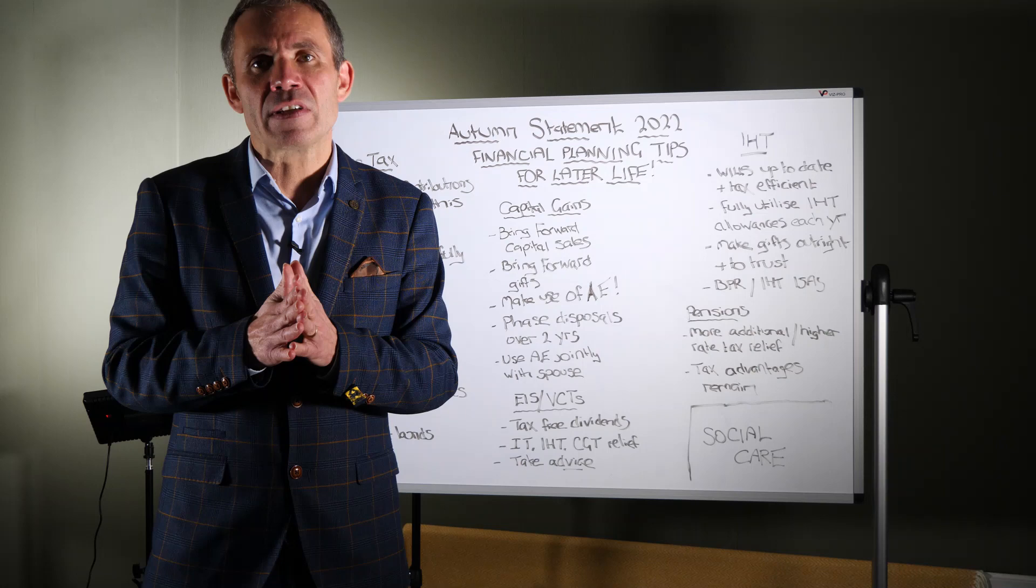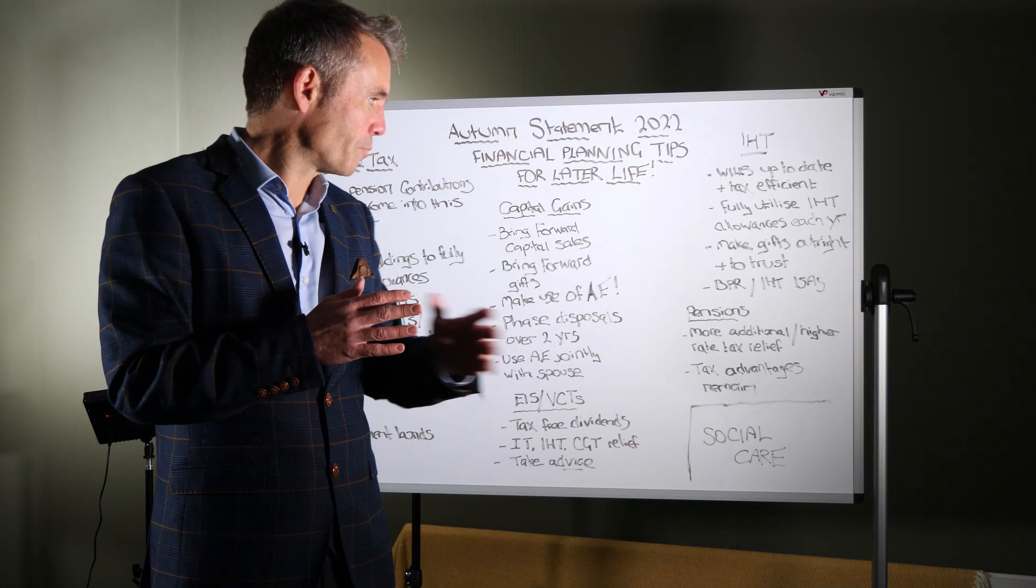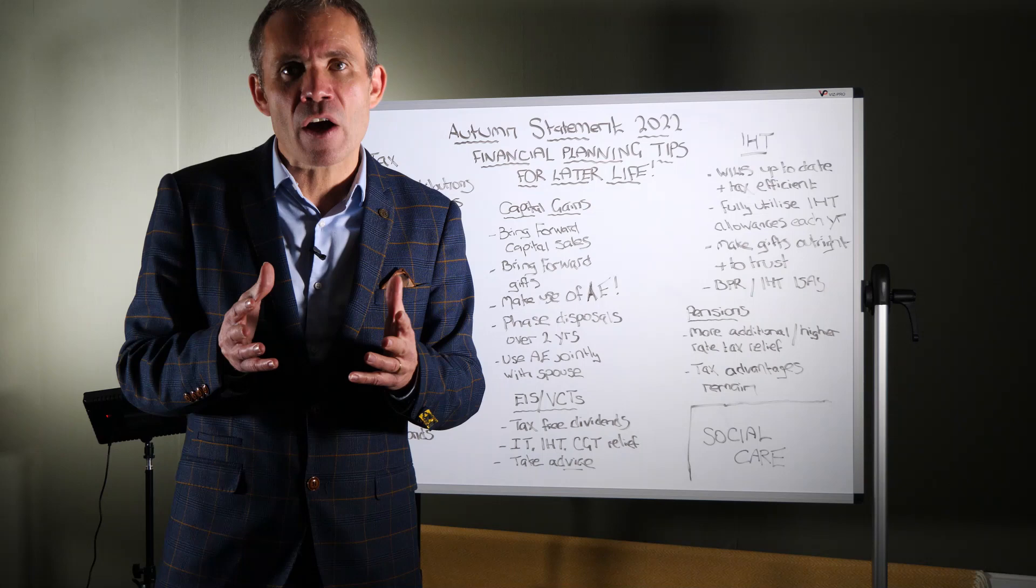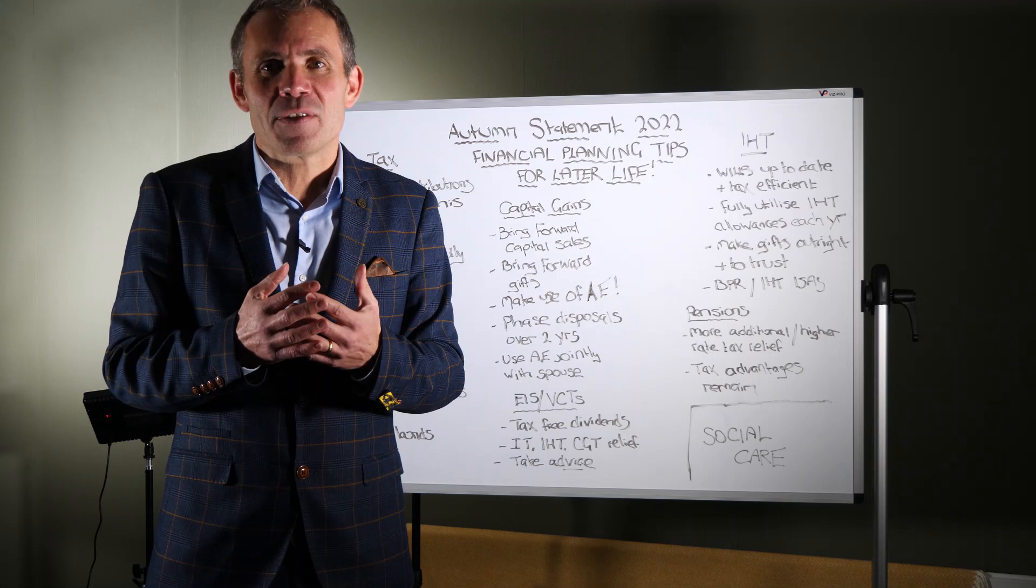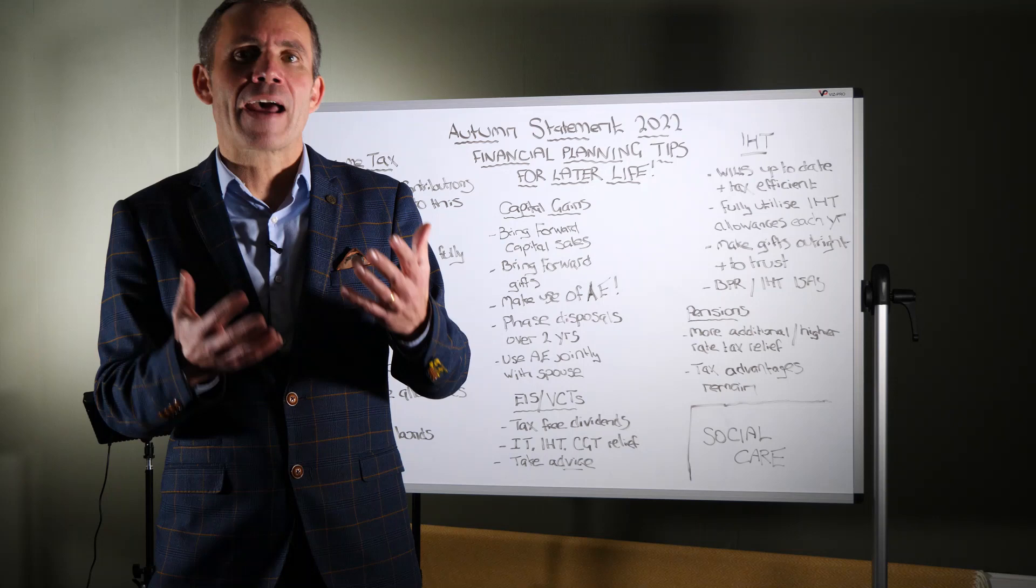If you're still looking for some sort of control over those assets, then consider trust planning, gifting assets to trust for the ultimate benefit of your children. And don't forget business property relief investments, inheritance tax-free ISAs, where you're still owning those assets. They're still your assets to do with whatever you want to do with them. But after just two years, they would be inheritance tax-free. So definitely if you've got inheritance tax issues, you're looking to plan around inheritance tax, get in touch, and we can take you through those potential solutions.